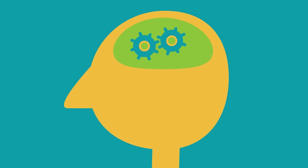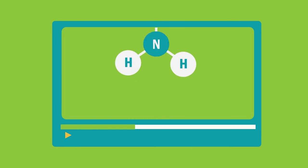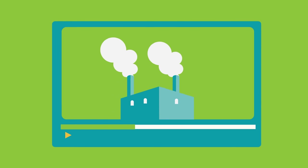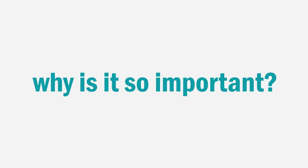We have previously learned about the Haber process as the industrial method to produce ammonia. Why do we need such large quantities of ammonia, and why is it so important?